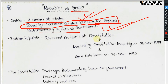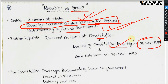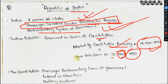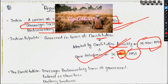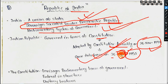The Indian Republic is governed in terms of the Constitution adopted by the Constituent Assembly on 26 November 1949. It came into force on 26 January 1950 — which we all know as Republic Day of India.